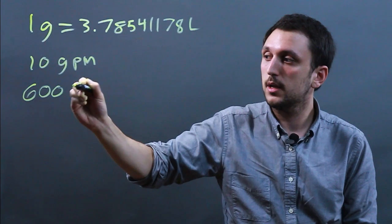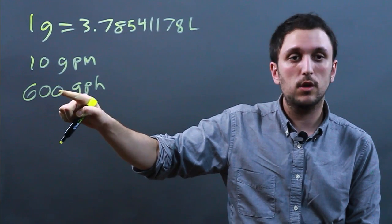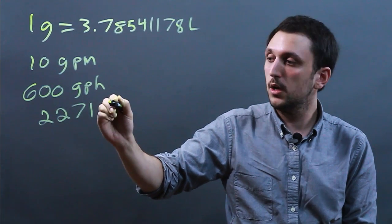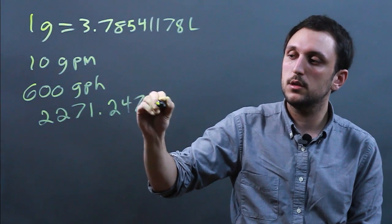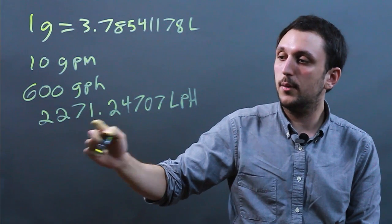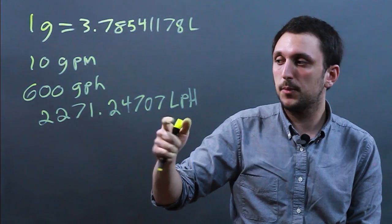So that would be 600 gallons per hour, which then becomes 2,271.24707 liters per hour, which is now a kiloliter being a thousand liters is going to be less than this.